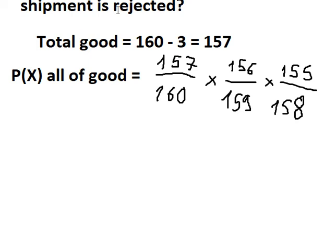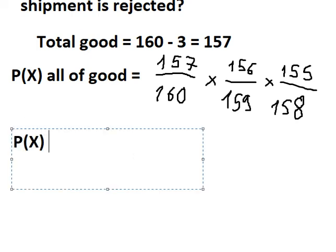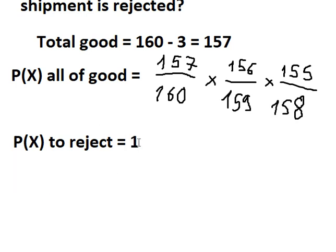Now we can find the probability to reject. That's about number one. Number one represents 100%. We need to minus this value here.